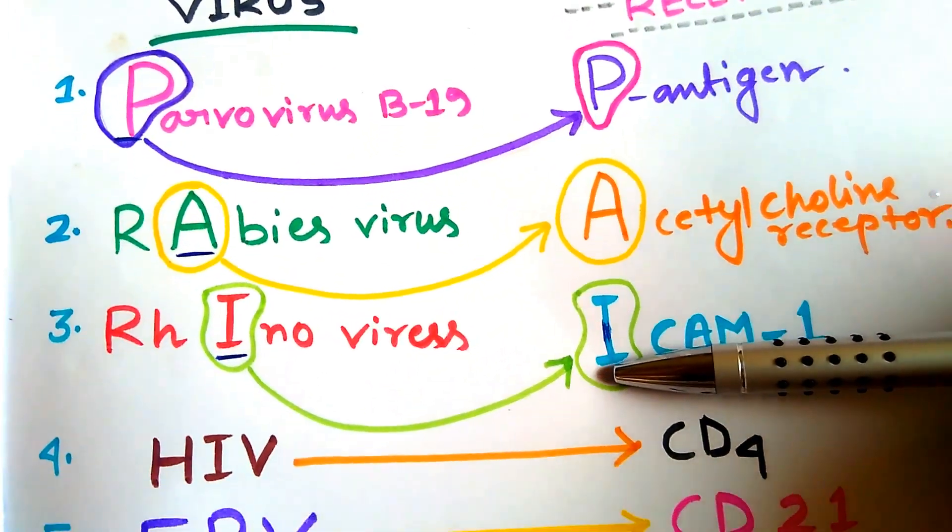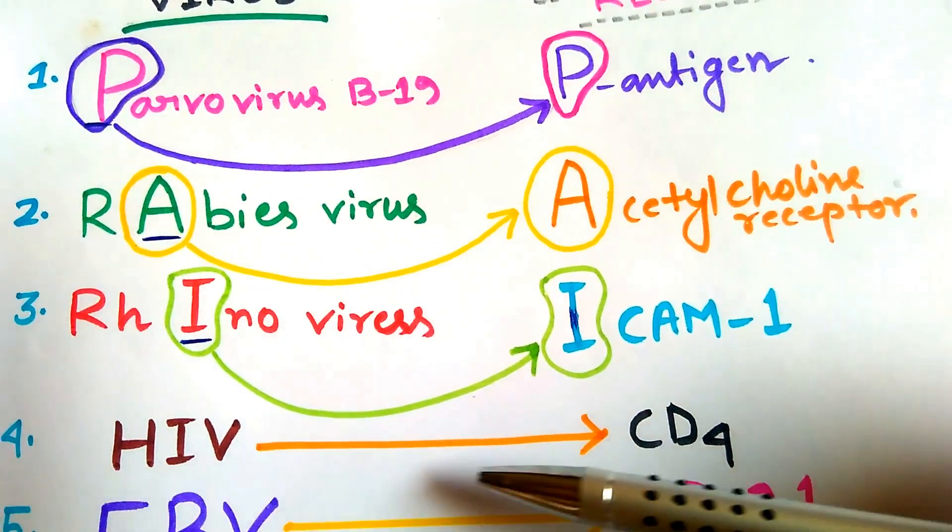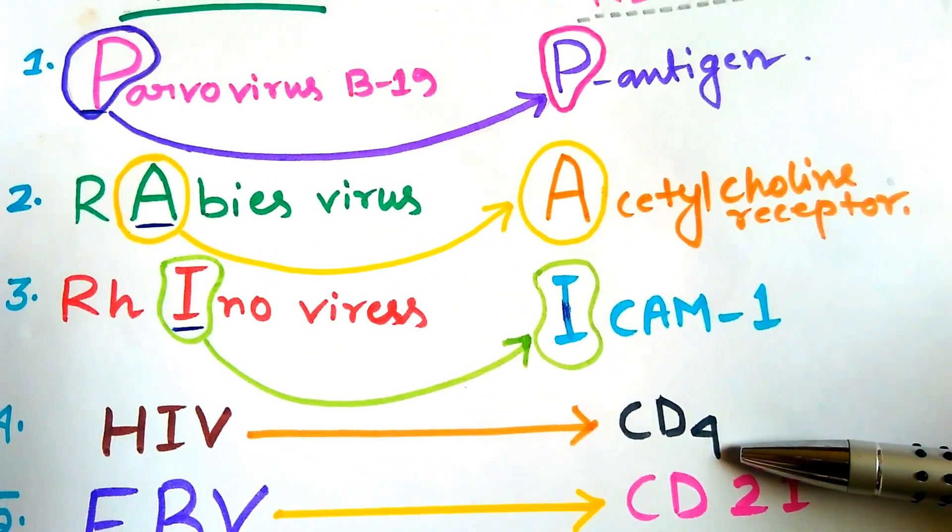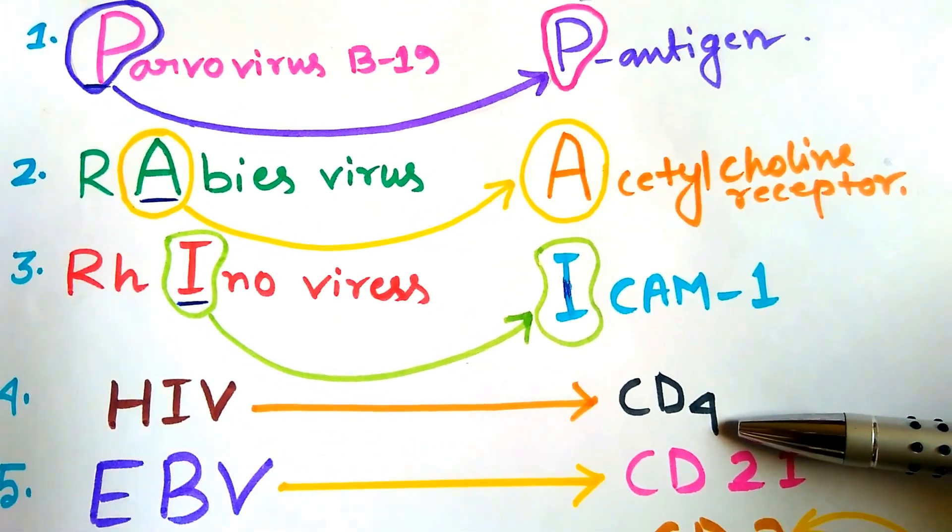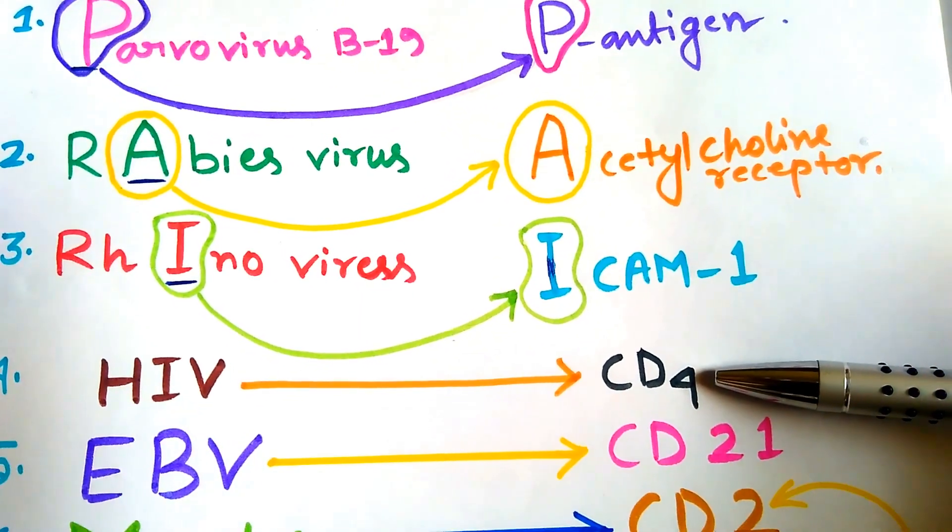Now here is HIV—the receptor is CD4. I am very sure that everybody knows it, which is not difficult.